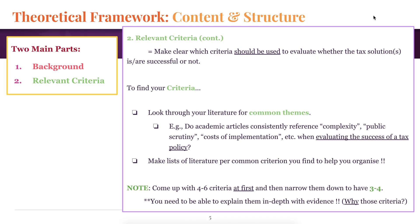Another note on relevant criteria is finding them. A way you can do this is to look through your literature for common themes. If you're looking at a lot of articles about specific concepts relating to public taxation or digital service taxes, and topics continuously keep coming up when people are analyzing whether or not they support these tax policies — those could be your criteria. For example, do academic articles consistently reference the complexity of implementing a tax solution, how much public scrutiny a company would get if they publish their tax payments, or how much it costs to implement a tax policy?